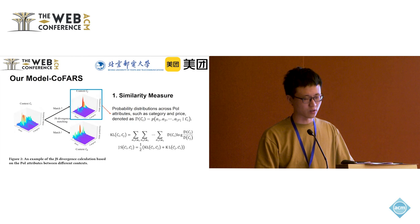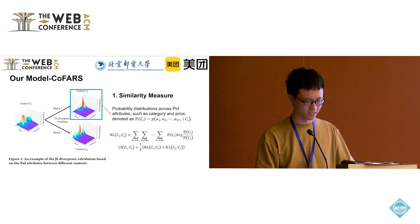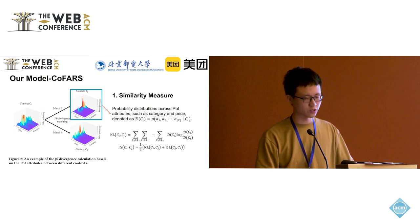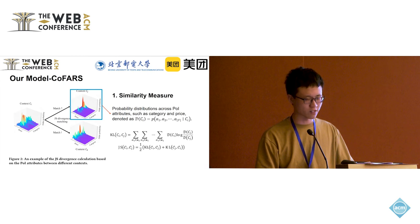A traditional metric like cosine similarity on context embeddings struggles with interpretability and embedding quality. We found that representing user preferences within contexts through probability distributions of point attributes like category or price is more effective. Inspired by this, we use Jensen-Shannon divergence to compare preferences across different contexts, offering better accuracy in representing user preferences.